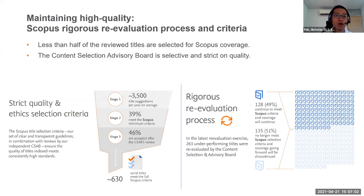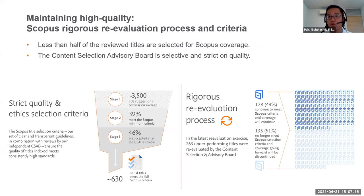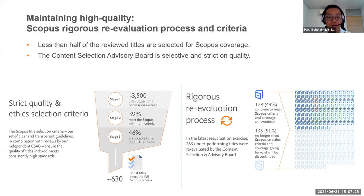A key concern people have raised — because of the Springer Scientometrics article published — is content quality. Scopus always looks to maintain high quality content through a rigorous re-evaluation process. Less than half of all reviewed titles are selected for Scopus coverage, and we have a Content Selection Advisory Board comprising top-quality journal editors with very strict selection criteria.